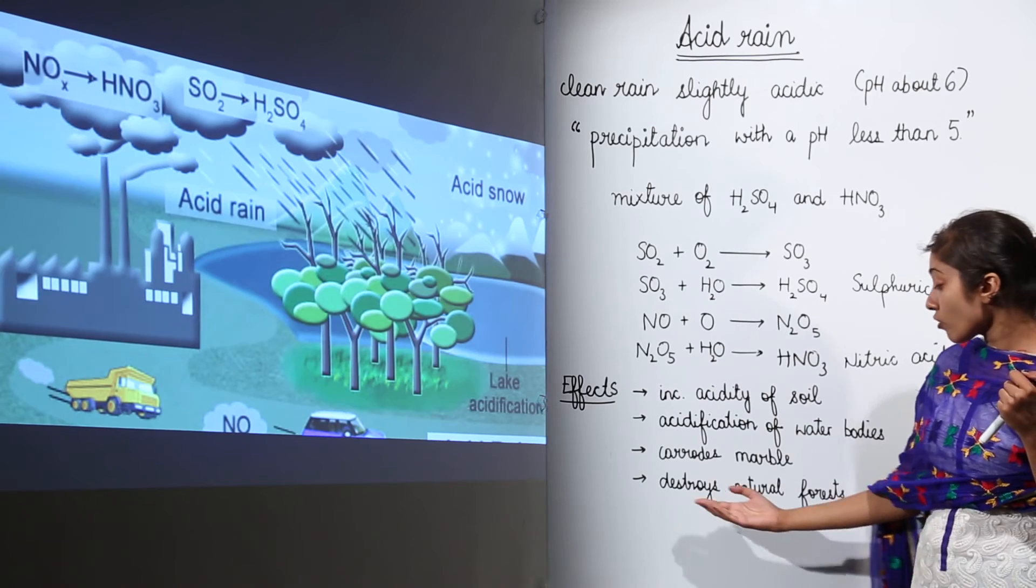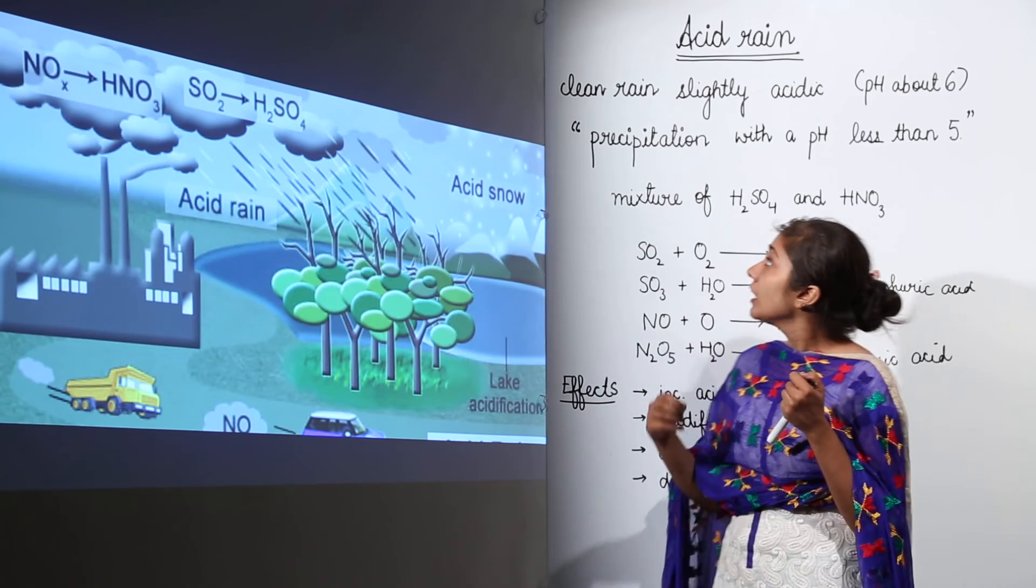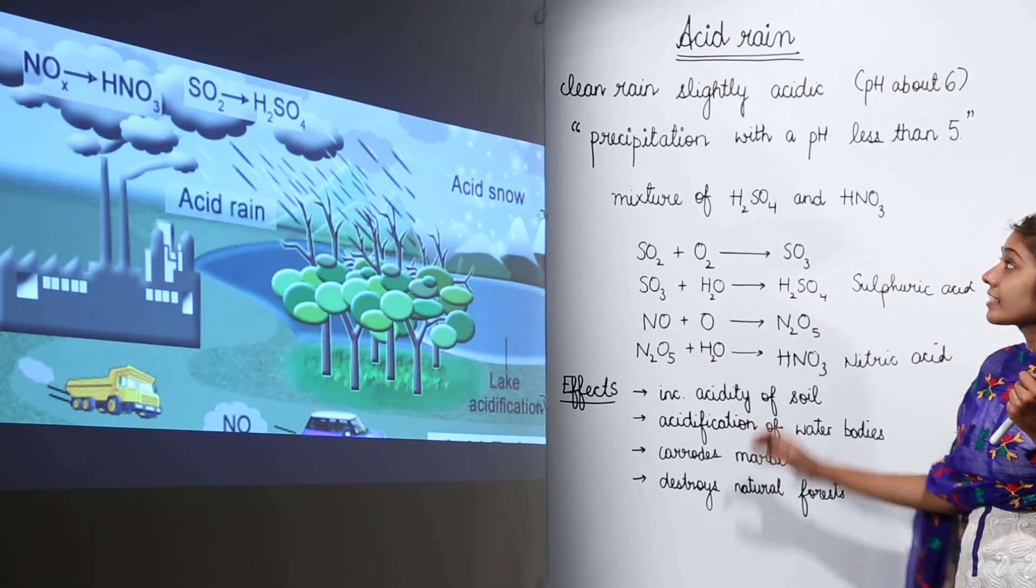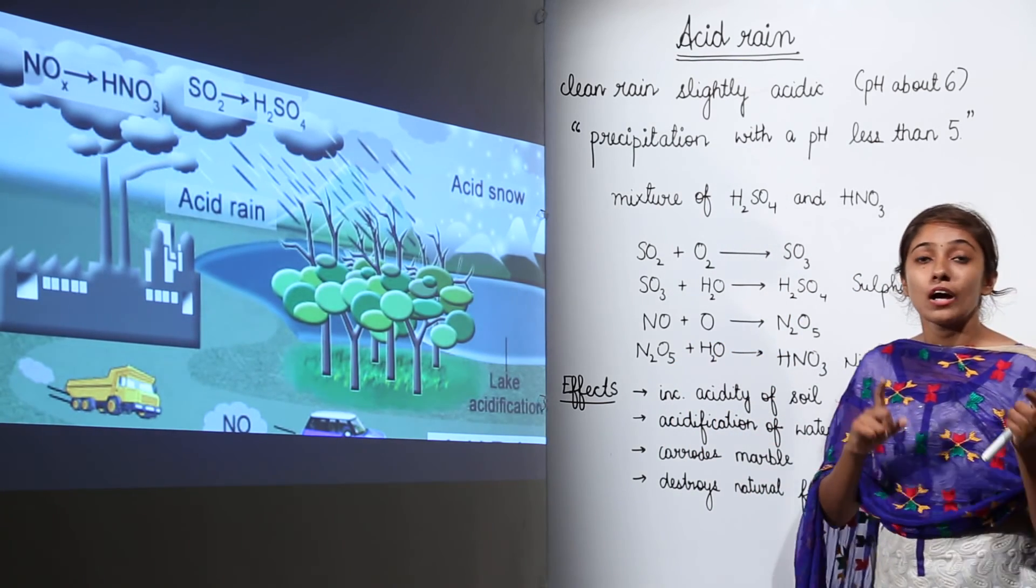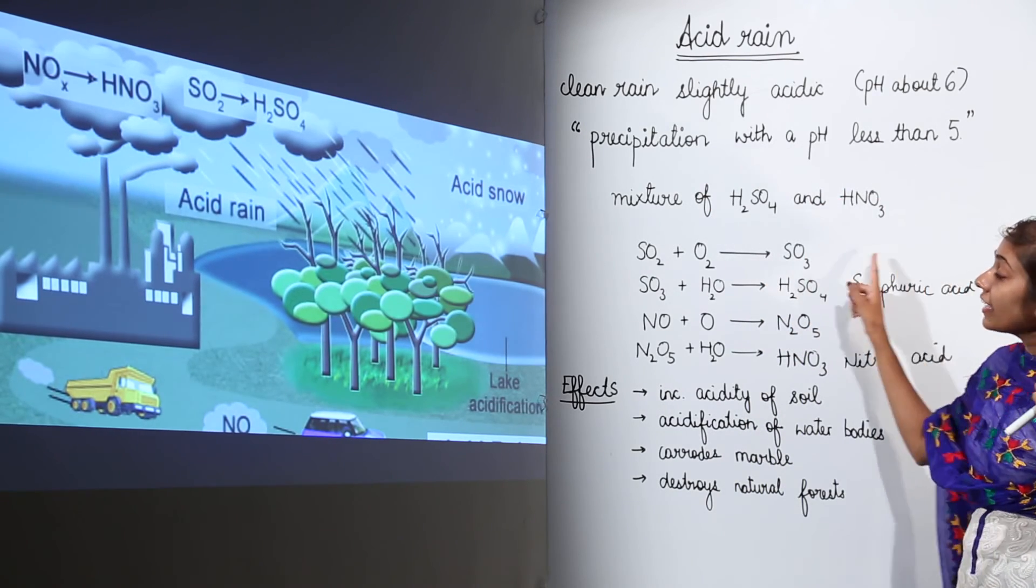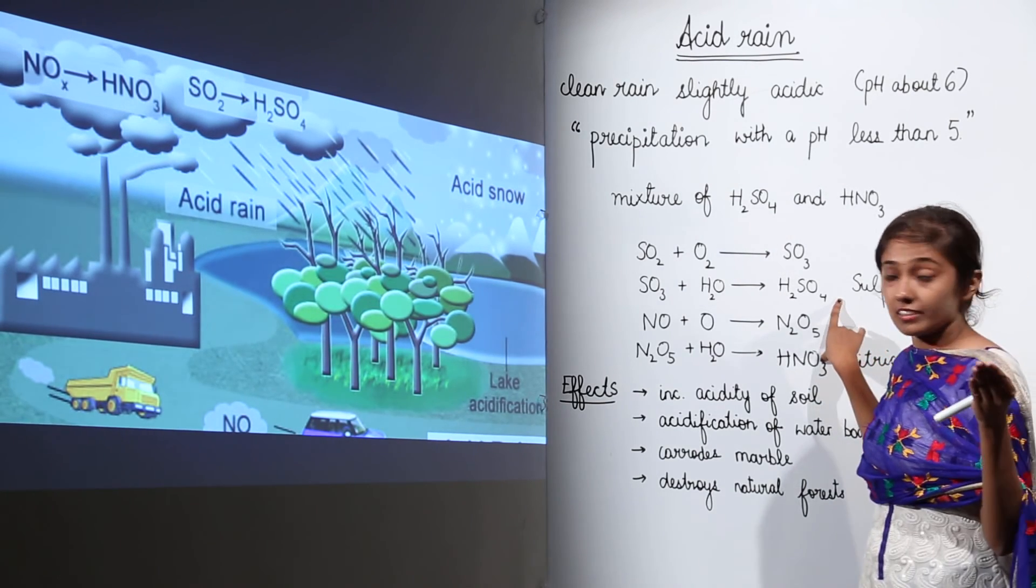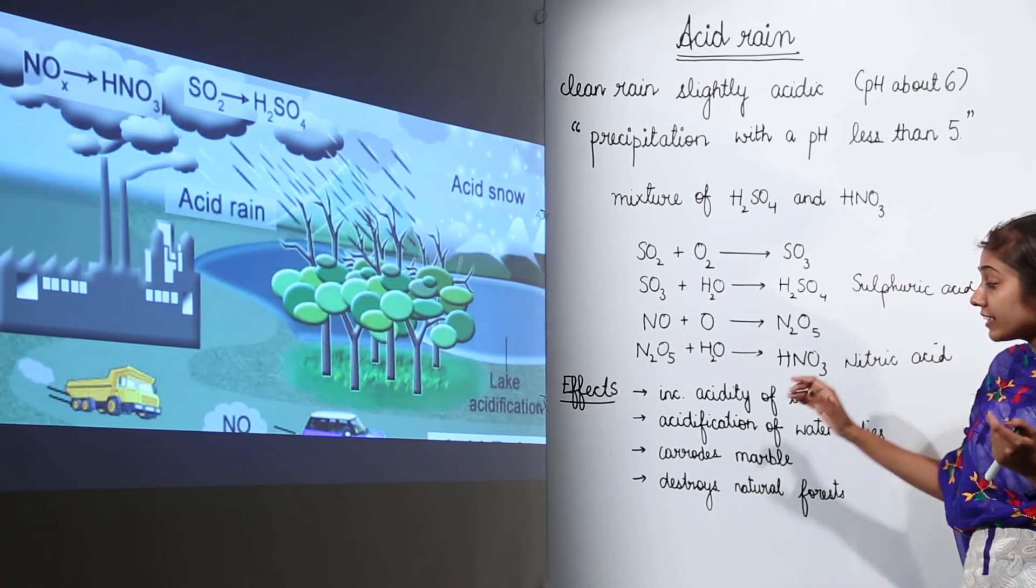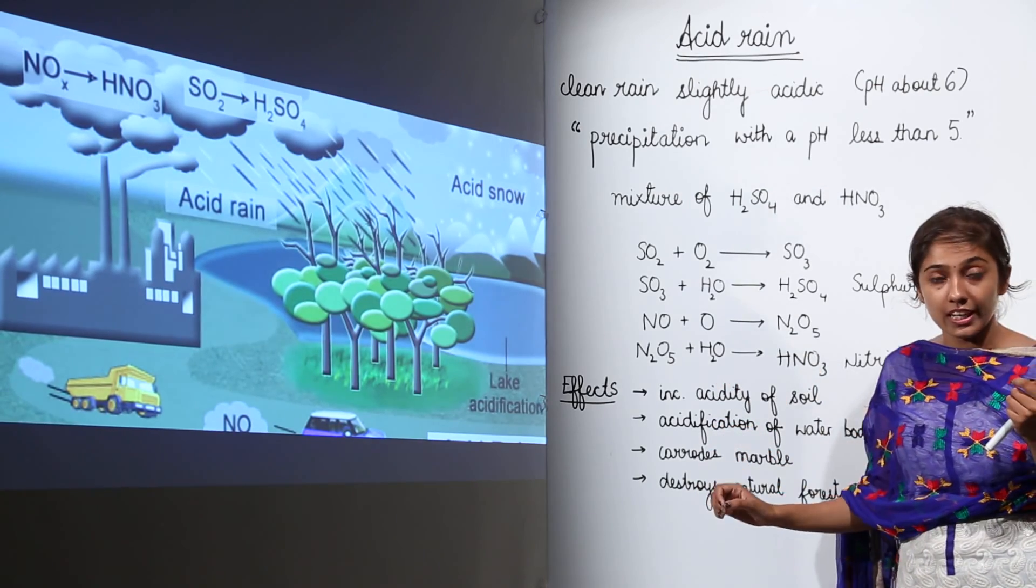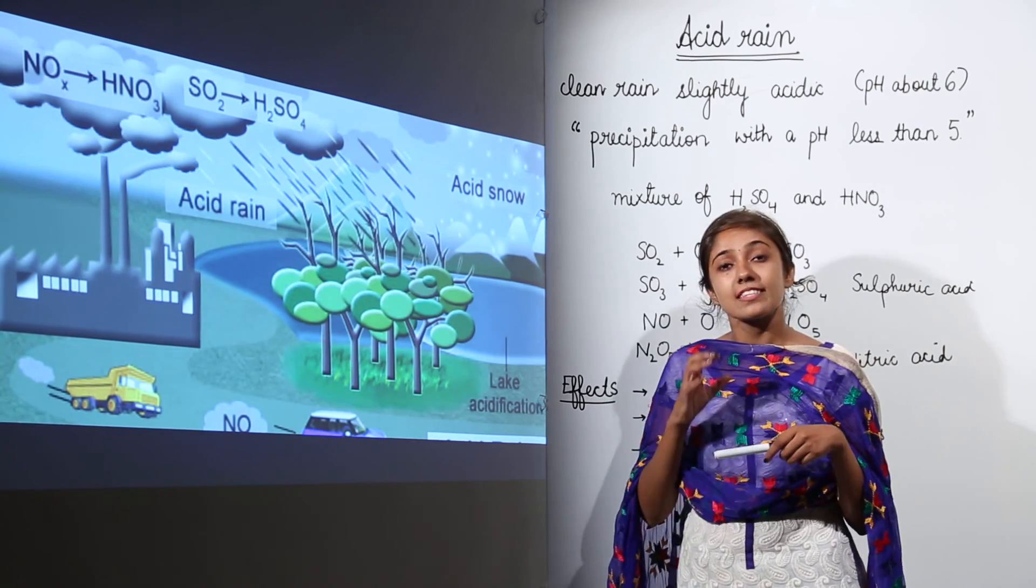Then acid rain destroys natural forests also. So when it falls on natural forests, it also destroys them. So these are the effects of acid rain. Just remember how you are going to define this: precipitation with a pH less than 5, and these two acids which are responsible make the rain acidic. How they are formed and these are the effects of acid rain. So I hope this very simple topic is clear to you. Acid rain.